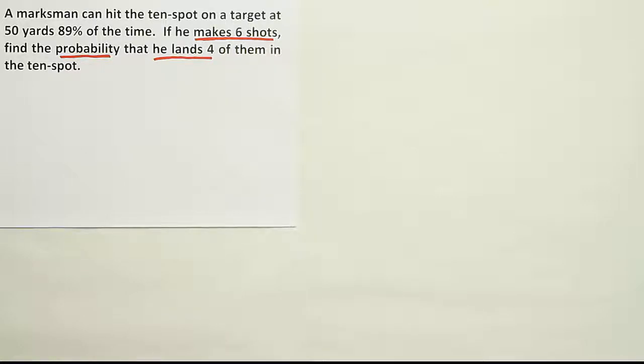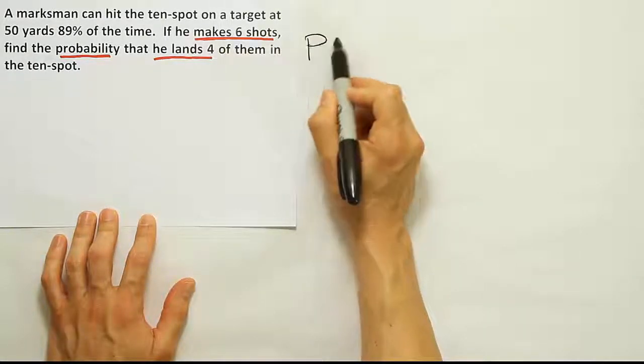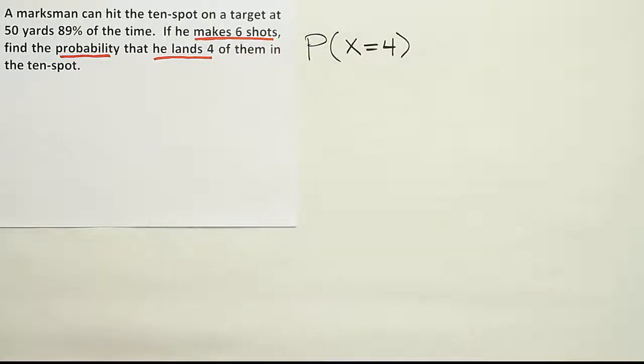Okay. Now, at that point, once we realize all of that, then the next step is to go ahead and write the probability statement. So we're going to say, okay, look, we're looking for the probability that X is equal to four. This means he makes four shots out of his six attempts.